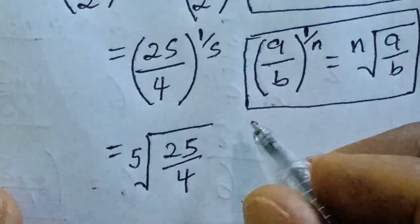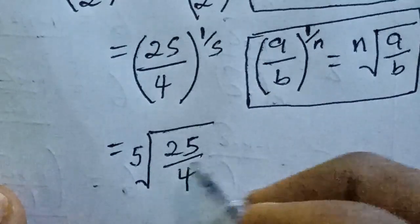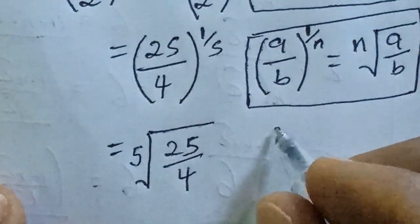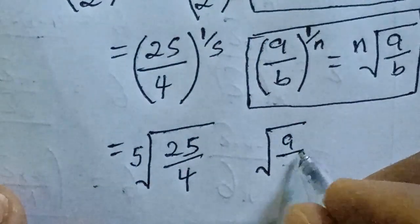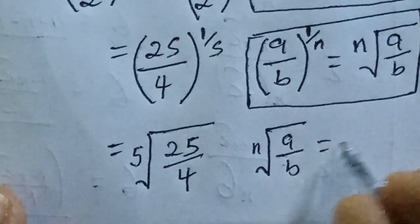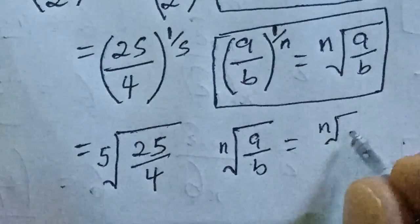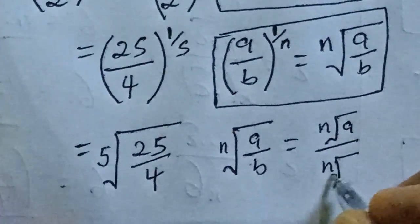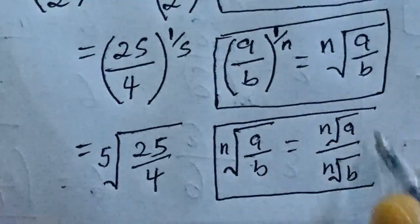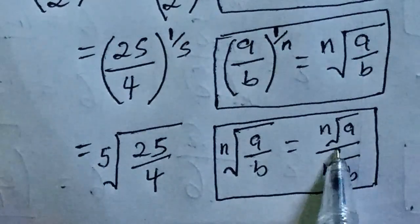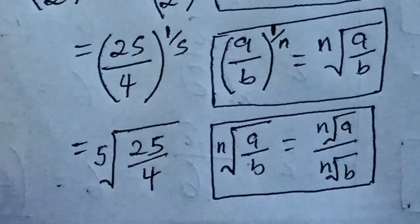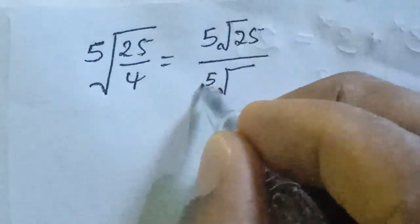So we consider this to simplify, and that becomes the fifth root of 25 over 4. Now having done this, we can express this also using the identity: the n-th root of (a over b) can be simplified as n-th root of a over n-th root of b. So our next step becomes the fifth root of 25 over the fifth root of 4.